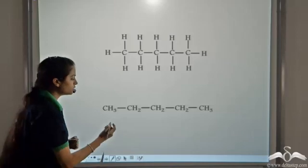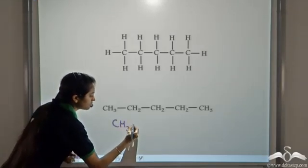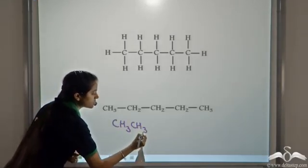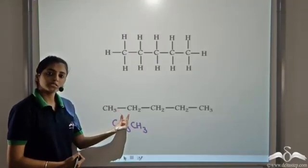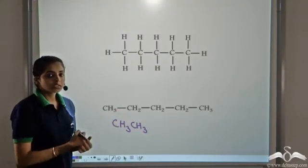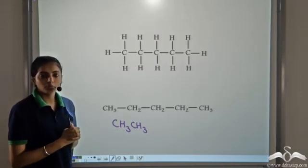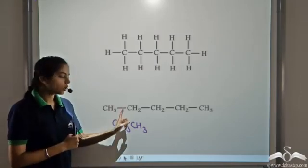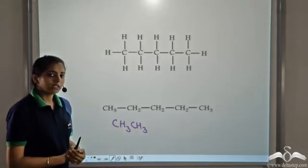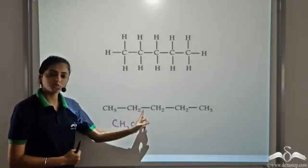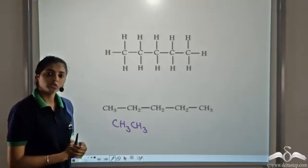Why do we specify the single covalent bond between carbon atoms? This is because in the case of alkanes, it is a saturated hydrocarbon, so all the bonds are single covalent bonds. But in the case of alkenes, if we do not mention these bonds, how do we know whether it is a single or a double covalent bond?